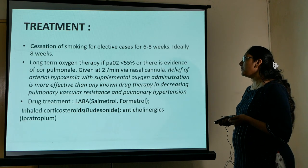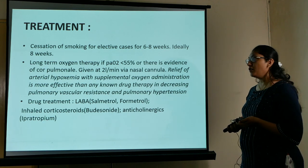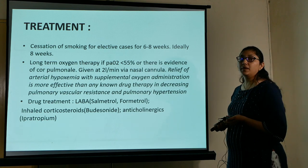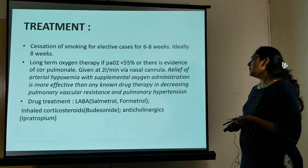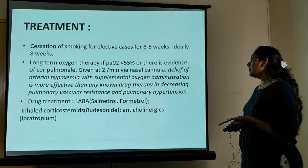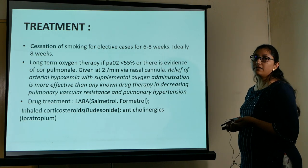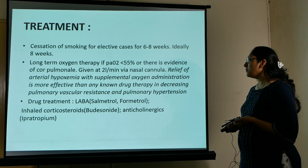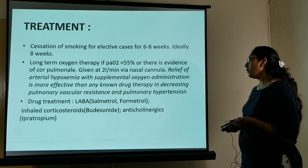Treatment includes cessation of smoking for as long as possible. Long-term oxygen therapy is indicated if the patient has a PaO2 of less than 55 mmHg, as it decreases arterial hypoxemia; there is no better therapy for decreasing pulmonary vascular resistance than supplemental oxygen. Drug therapies include salmeterol, formoterol, and inhaled corticosteroids.